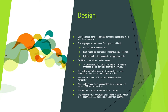For design, GitHub version control was used to track progress and mark milestone changes in the project. Languages utilized were C++, Python, and Bash. C++ serves as the benchmark language. Bash would run the tests and record energy readings. Python would either generate or aggregate data.